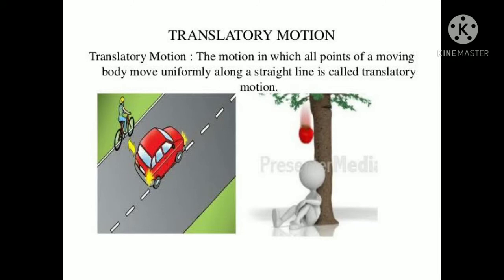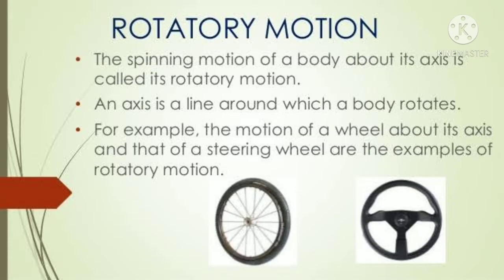The motion in which all points of a moving body move uniformly along a straight line is called translatory motion. For example, an apple falling is also translatory motion. The second type is rotatory motion — the spinning motion of a body about its axis is called rotatory motion. An axis is a line around which a body rotates.